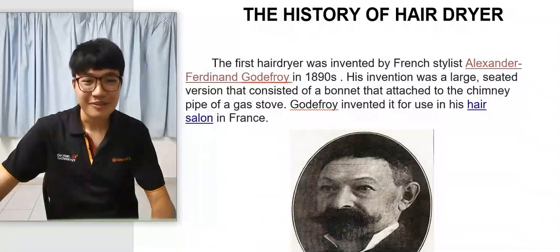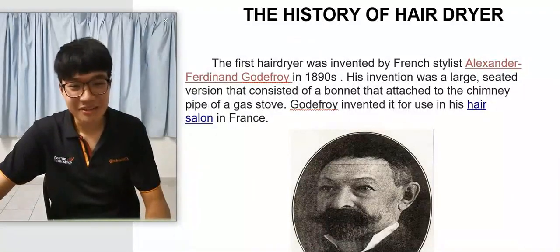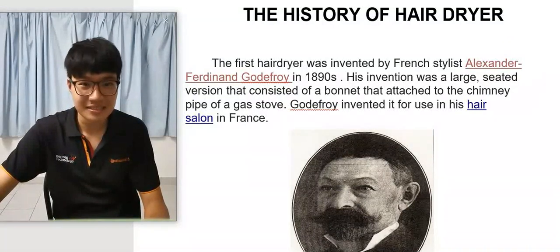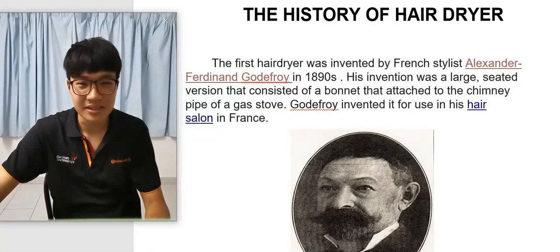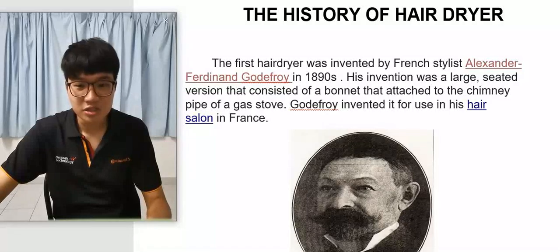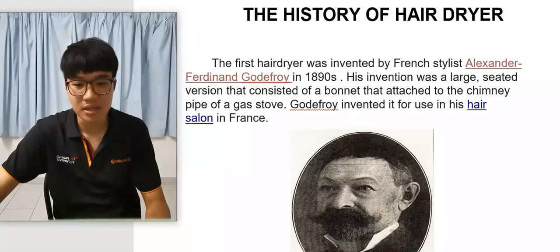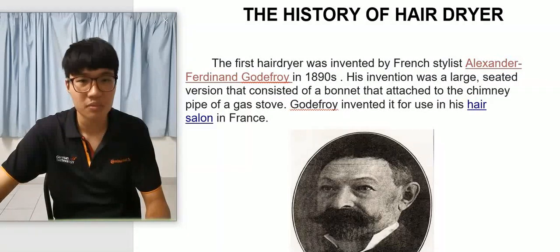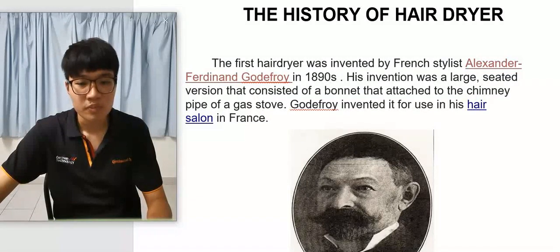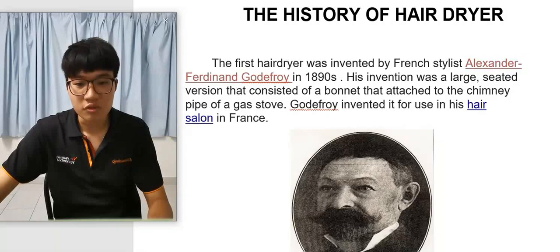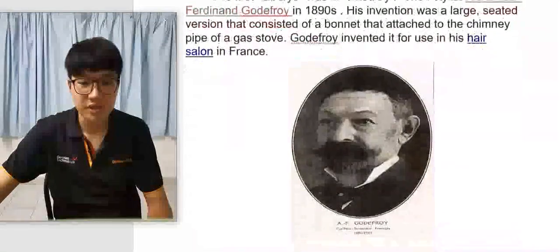Hello, my name is Fo Yan Chang. The first hair dryer was invented by French stylist Alexander Ferdinand Godfrey in 1890. Its invention was a large seated version that consisted of a bonnet that attached to the chimney pipe of a gas stove. Godfrey invented it for use in his hair salon in France.